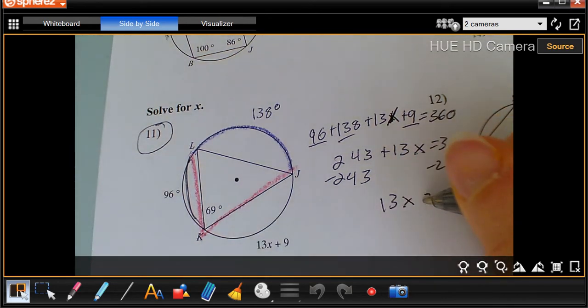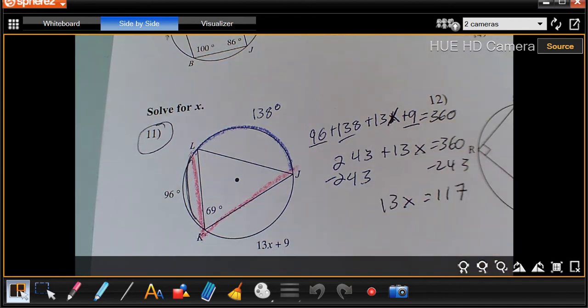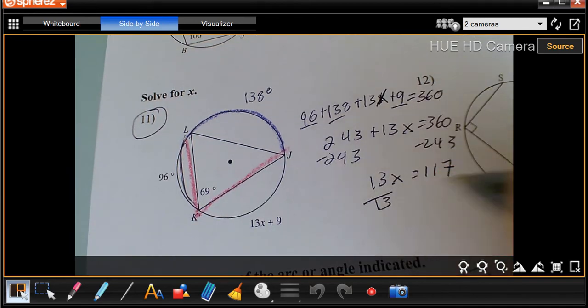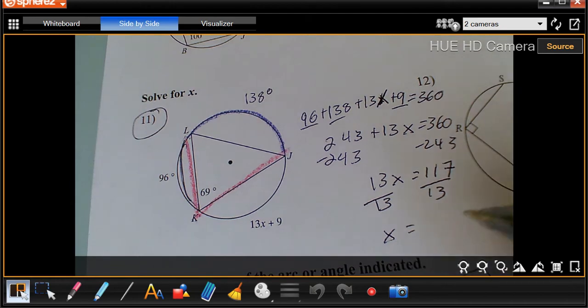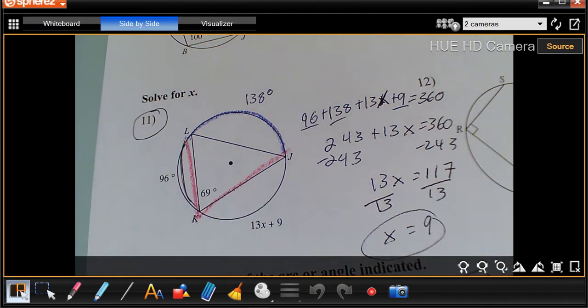And I'm going to go 360 minus 243 gives me 117. So 13X equals 117. Now I'm going to take that and divide it by 13. So then X equals 9. And that's my final answer because it just asked me to solve for X.